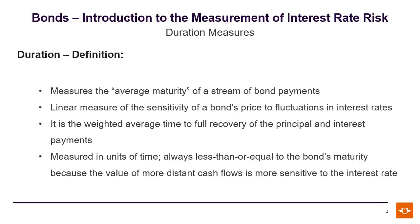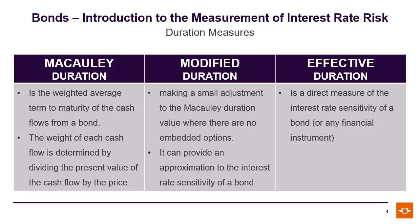The three duration measures we will be focusing on are the Macaulay duration, the modified duration, and the effective duration. The Macaulay duration calculates the weighted average term to maturity of the cash flows from a bond, where the weight of each cash flow is the present value of the cash flow divided by the price. With the modified duration, we make a small adjustment to the Macaulay duration. Both the Macaulay and modified duration are used for option-free bonds. The effective duration is used for bonds with embedded options.